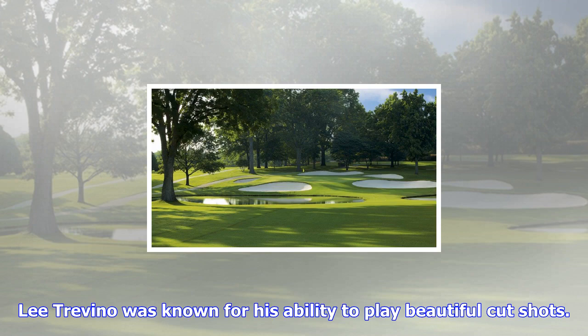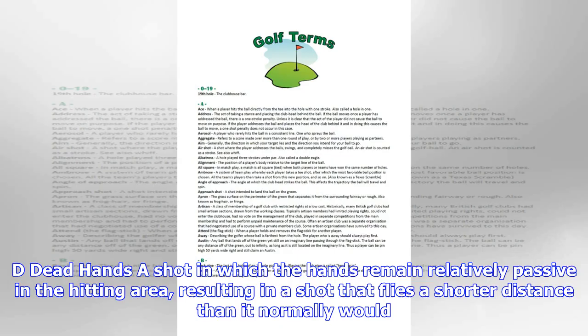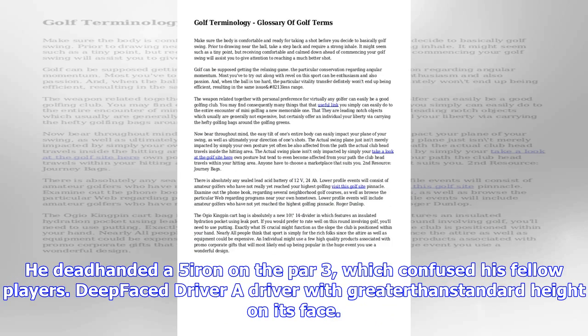Compression: a measure of the relative hardness of a golf ball, ranging from 100 (hardest) to 80 (softest). Like most powerful players, he preferred a 100 compression ball.